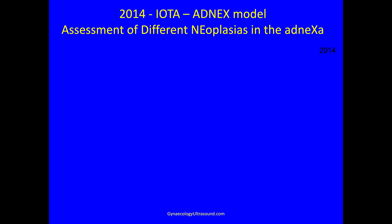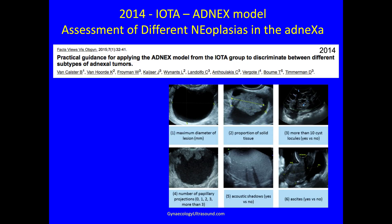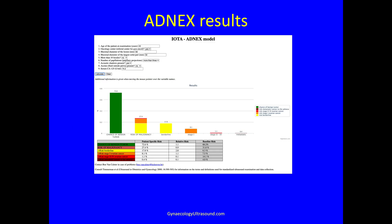ADNEX was published in 2014 by the IOTA group. It looks at six different ultrasound features of the lesion and includes in the model the patient's age, whether she was scanned in an oncology centre or other, and an optional CA125 test. The model is available online or on your phone — you enter the data and press calculate. It gives you the chance of the lesion being benign or malignant, adding up to 100%. If it's thought to be malignant, it will tell you whether it's likely to be borderline, stage one, stage two to four, or a metastatic tumour to the ovary.